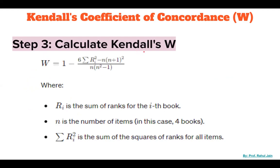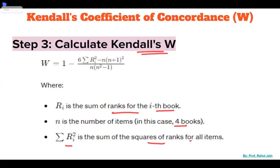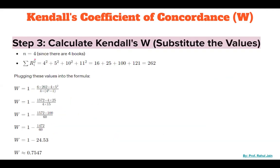Step 3: Calculate Kendall's Coefficient of Concordance. In the formula, ri is the sum of ranks for the ith object, n is the number of total items (4 books), and ri squared is the sum of squares of ranks of all items. The sum of ranks are 4, 5, 10, and 11. Computing 4² + 5² + 10² + 11² gives a total of 262.